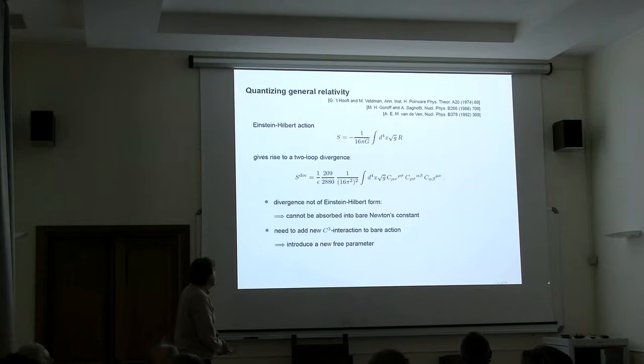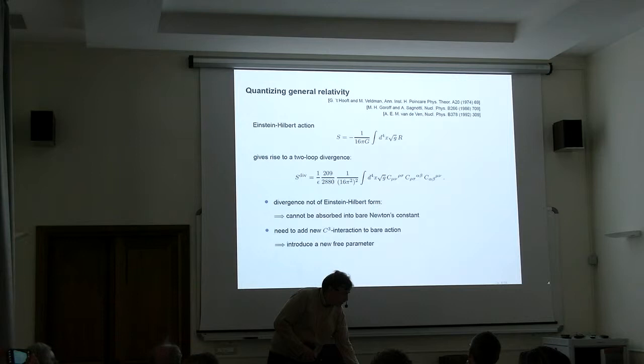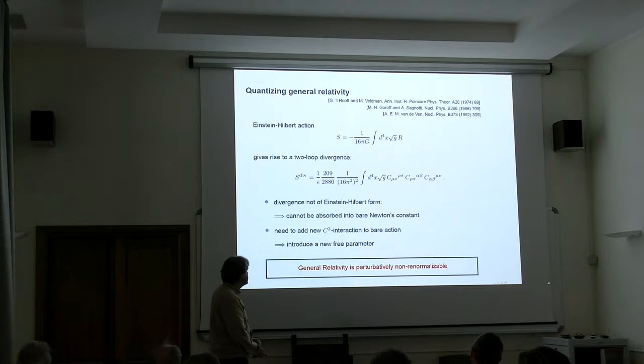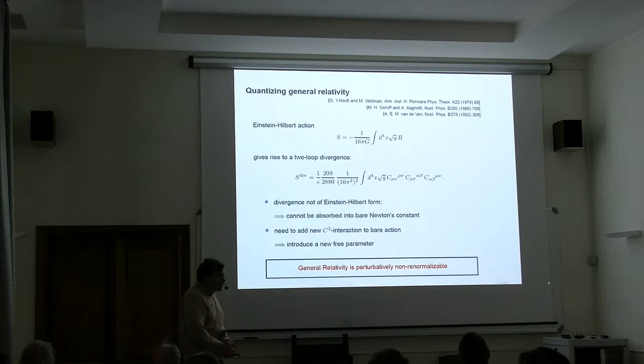So then what could you do? Well, you can add the C squared term to your initial action. This will introduce a new free parameter, and this is the onset of trouble. In general, it is expected that this is only the first counter term that appears in this series. You will probably need an infinite number of them, and this is the statement that general relativity is a perturbatively non-renormalizable theory.